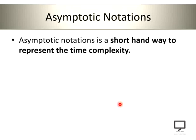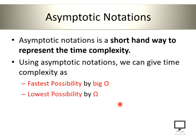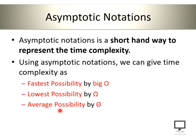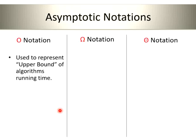Asymptotic notations are nothing but a shorthand way to represent the time complexity. They are represented as the Big O notation, Omega notation, and the Theta notation. Big O notation represents the worst-case possibility, Omega notation represents the best-case possibility, and Theta notation represents the average possibility. Here I am going to explain a comparative study of these asymptotic notations: Big O notation, Omega notation, and Theta notation.